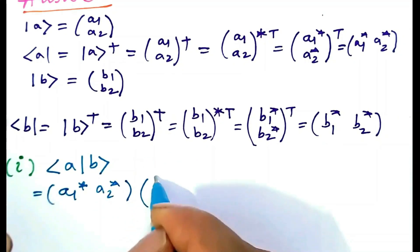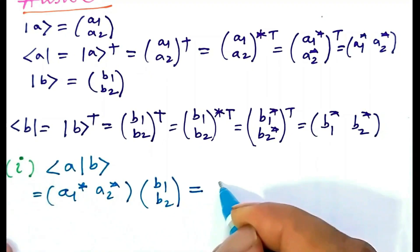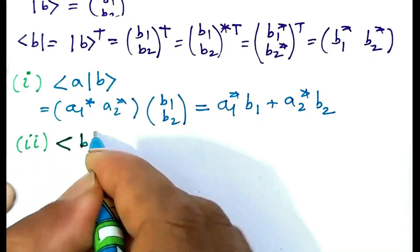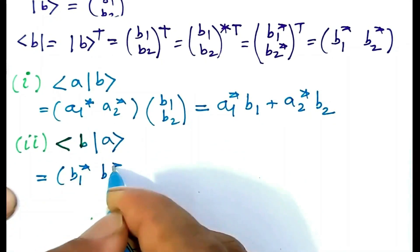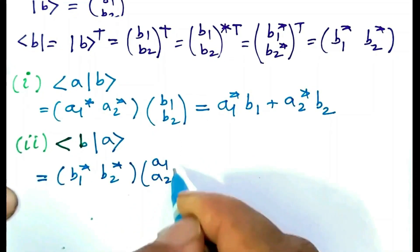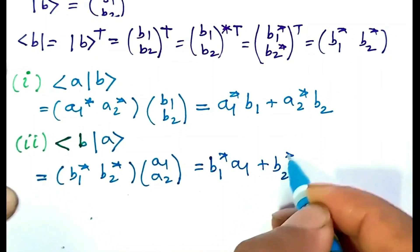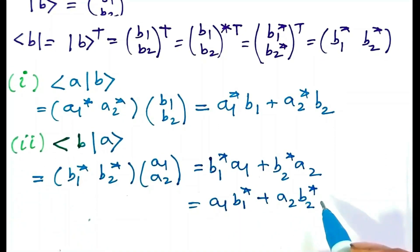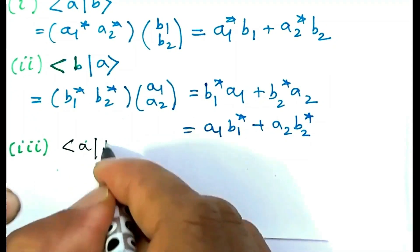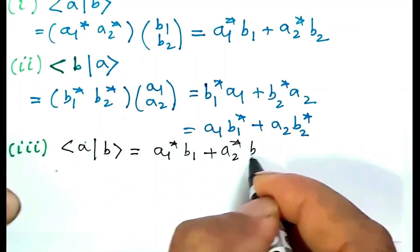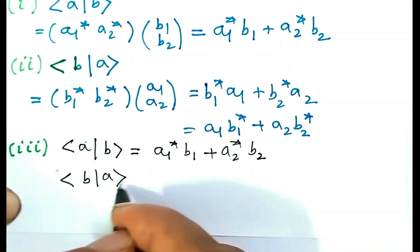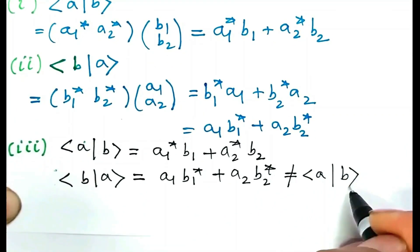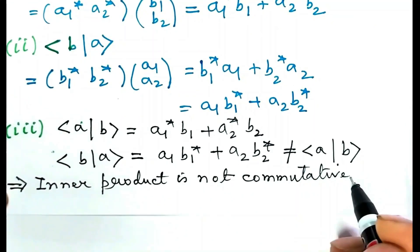The inner product bra A ket B equals a1*·b1 plus a2*·b2. For answer to two, the inner product bra B ket A is row matrix (b1*, b2*) multiplied by column matrix (a1, a2), which equals b1*·a1 plus b2*·a2, which can be rewritten as a1·b1* plus a2·b2*. For answer to three: bra A ket B equals a1*·b1 plus a2*·b2, while bra B ket A equals a1·b1* plus a2·b2* — not equal to bra A ket B. This means that inner product is not commutative in general.